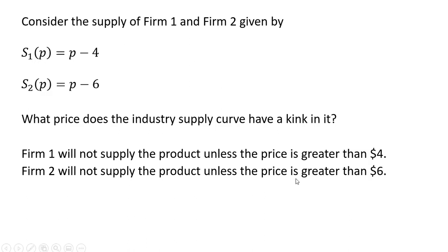Firm 2 will not supply the product unless the price is greater than $6. If the price is $5, the quantity supplied here is going to be 0. If the price is $6, the quantity supplied will be 0. Unless the price goes above $6, the quantity supplied will be 0.